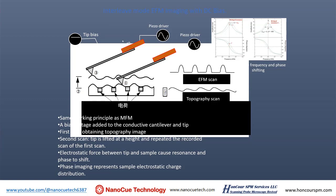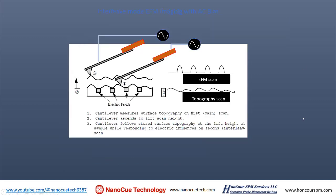That's the basics of the AC biased EFM — you apply an AC signal to the tip to cause the tip to oscillate up and down, and you detect that oscillation. The DC bias picture shows scanning the sample twice, detecting the attractive force. For AC bias, you scan the tip on the sample with tapping mode first, then lift the tip and switch the drive from the piezo to the bias tip. The piezo no longer oscillates; instead you apply an AC voltage to the tip. This AC voltage causes the electrical static force to cycle up and down at that frequency, and you detect that vibration — that's the EFM signal, which is much more sensitive.